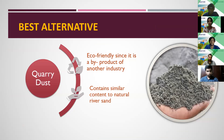Quarry dust — the stone screening remains from a quarry — can also be used as an alternative for sand. Quarry dust is abundantly available so the cost is low, and it also contains similar components to natural river sand. When mixed with 20% fly ash, it performs well as a substitute.